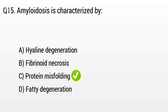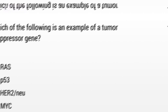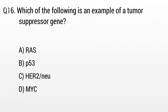Question 16. Which of the following is an example of a tumor suppressor gene? The right answer is Option B: p53.